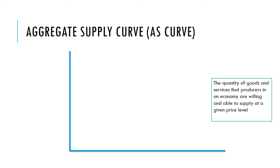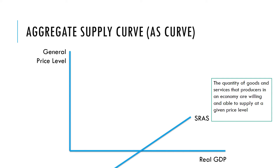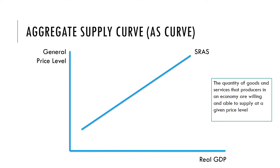We've also looked at aggregate supply, again using the same axes of general price level and real GDP. The aggregate supply curve shows us the quantity of goods and services that producers in an economy are willing and able to supply at a given price level.